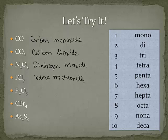Next we have two phosphorus atoms and five oxygen atoms. We get diphosphorus pentoxide. We drop that extra 'a' from penta before oxide, so it's diphosphorus pentoxide.